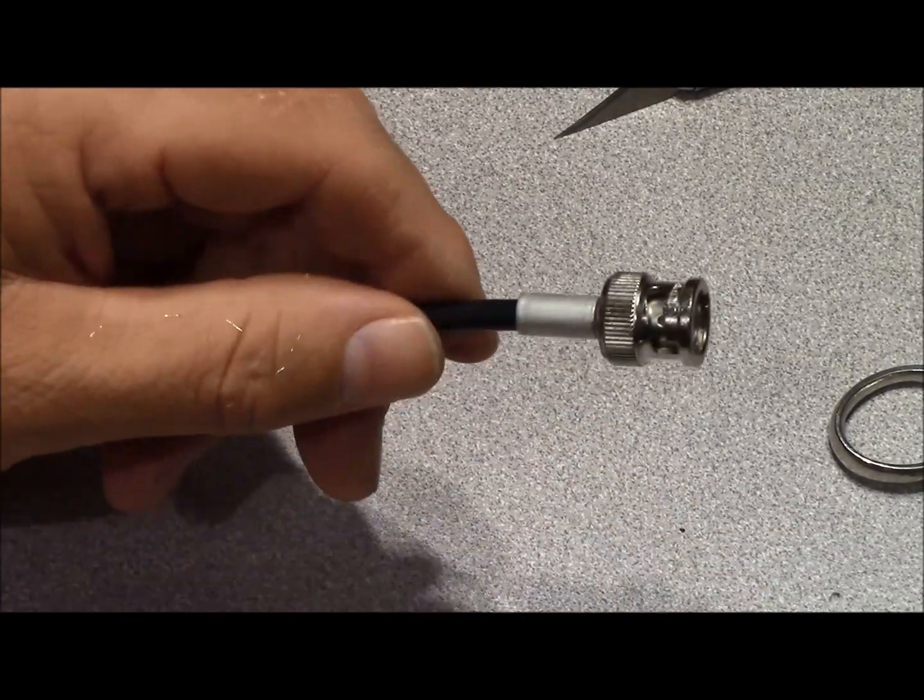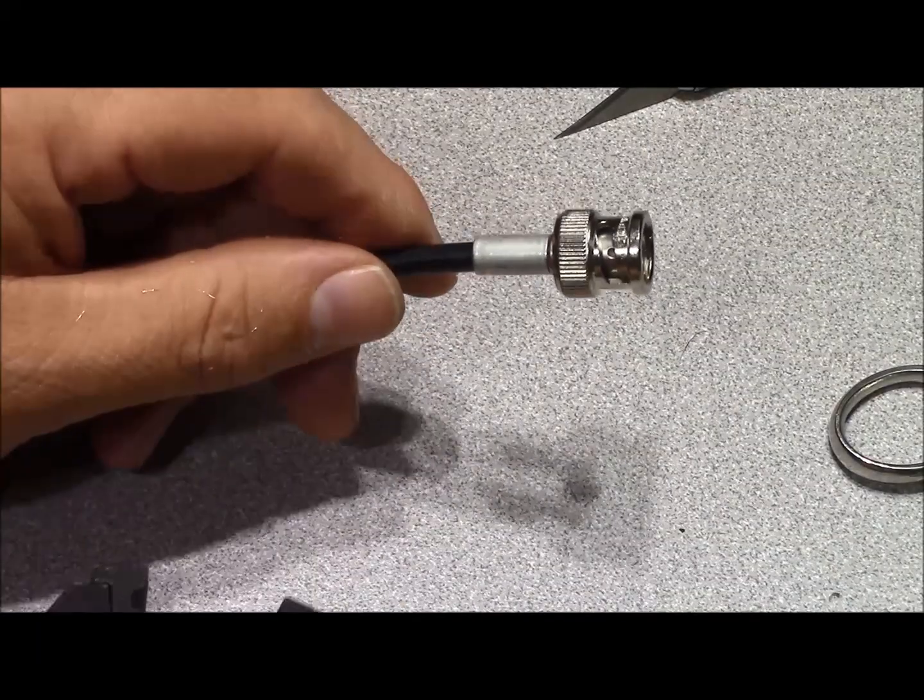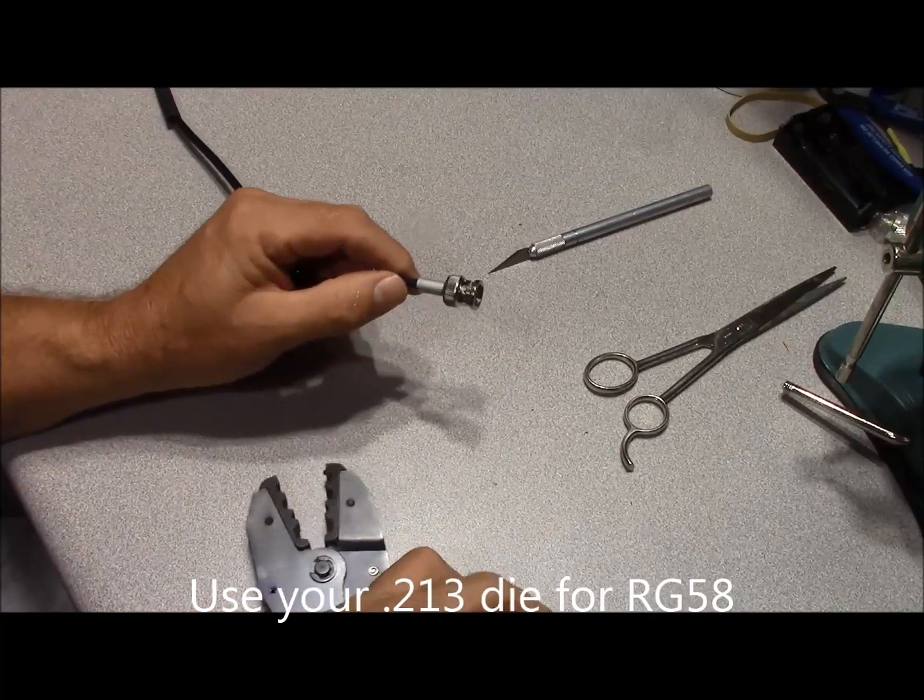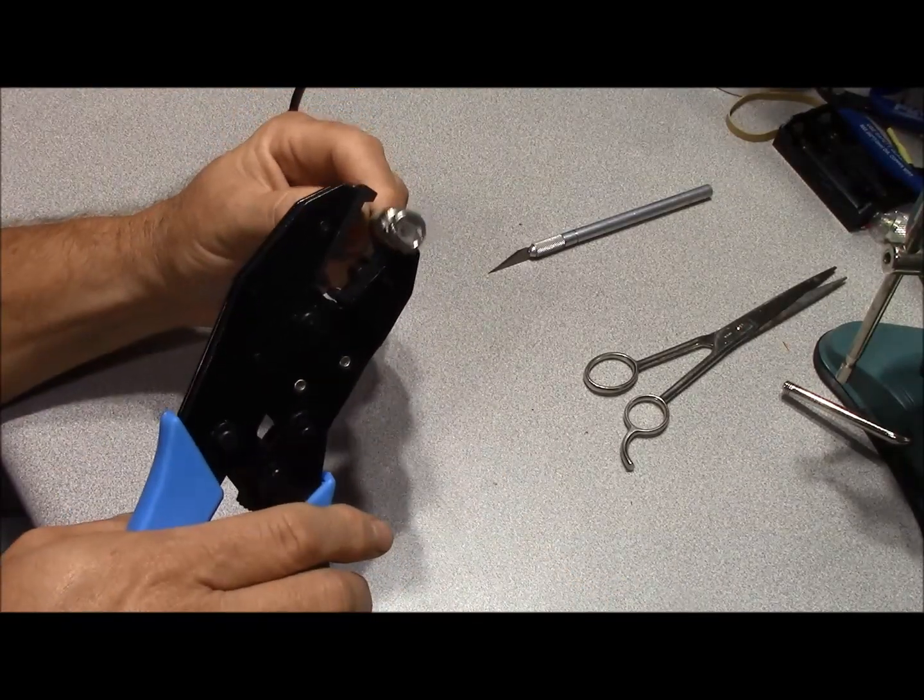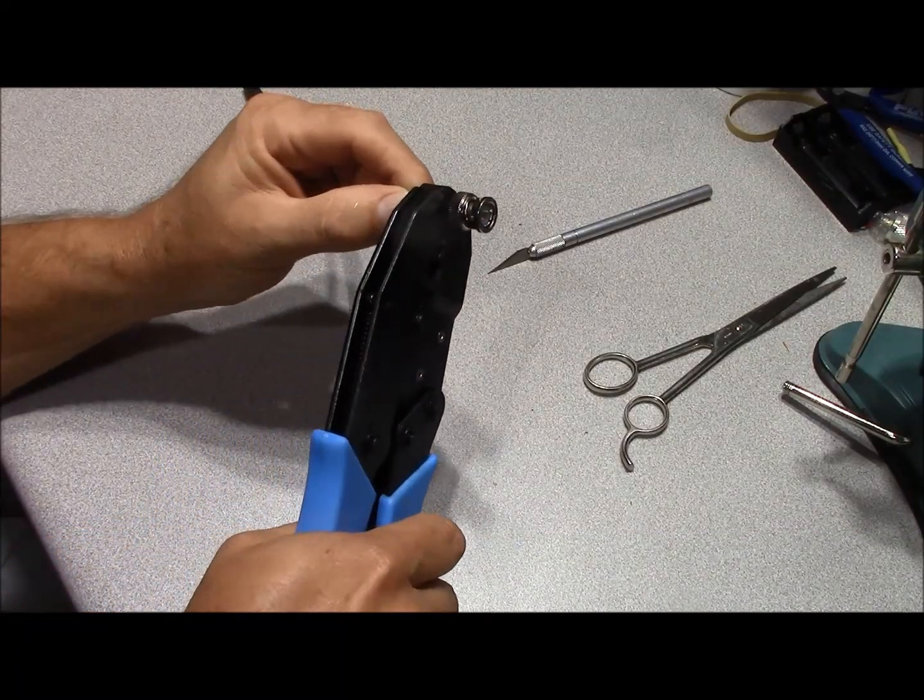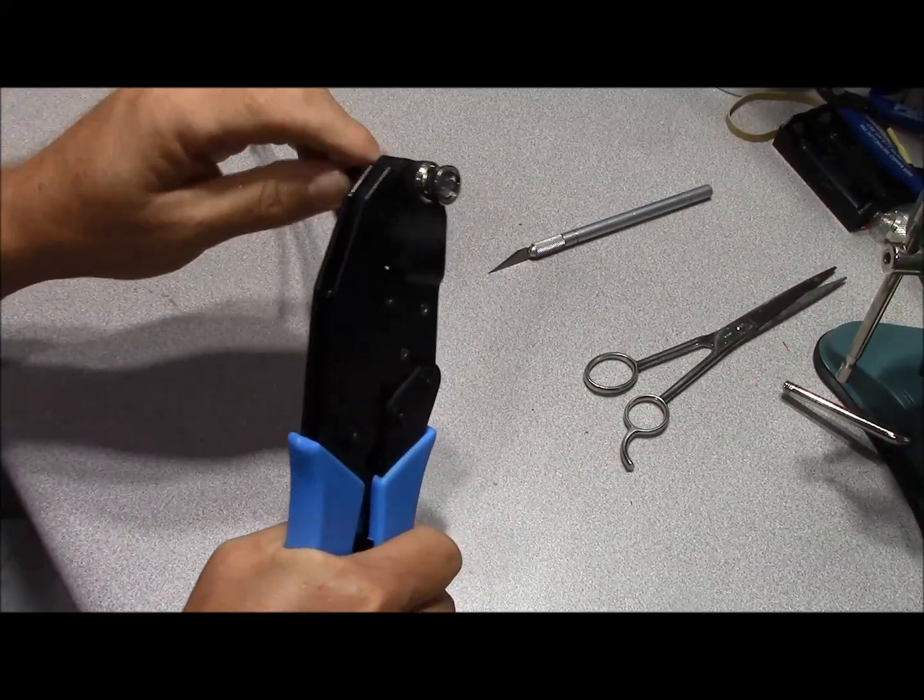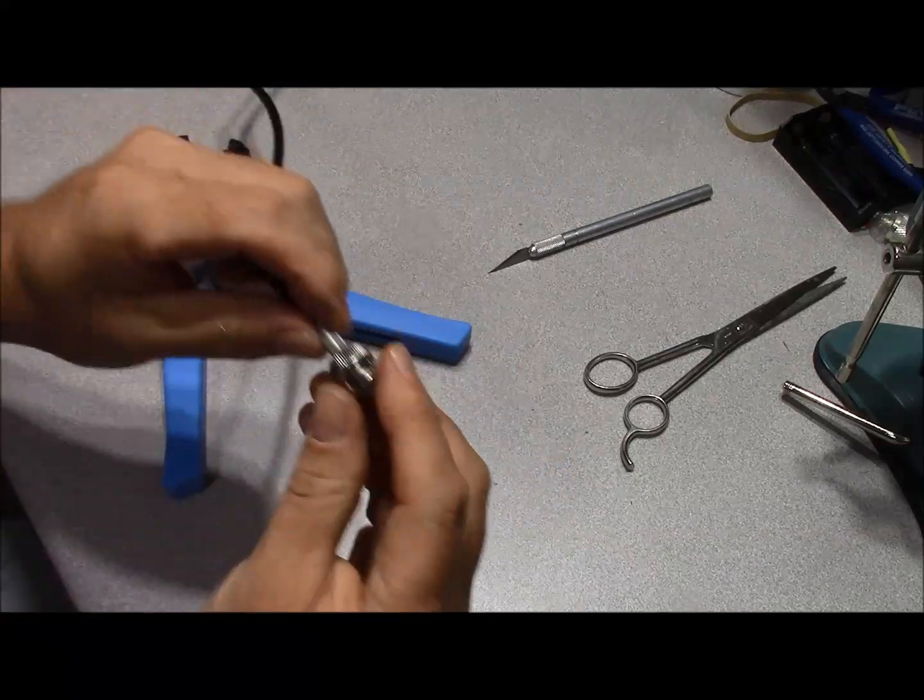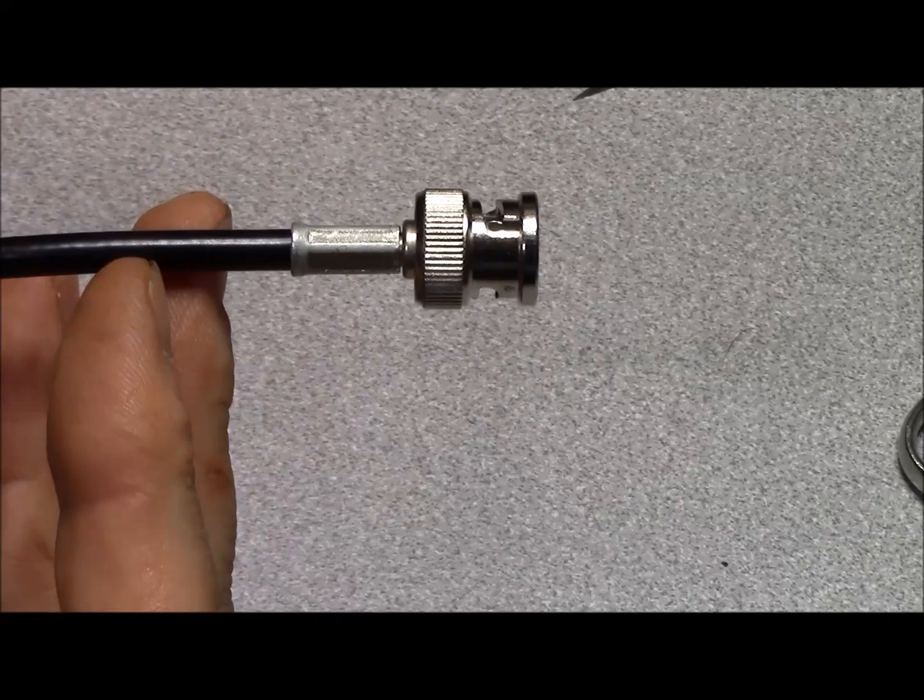Slide your ferrule over the tail of your connector and we're going to apply a crimp. And check your work. And you've completed termination.